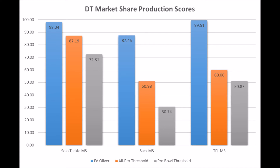He's going to be one of those types of defensive tackle prospects, or defensive line prospects in general, like a Myles Garrett, like a Joey Bosa, like a Jadeveon Clowney. Those were guys who had this type of production profile — obviously not at defensive tackle, but at the edge position. None of the edge players I've seen thus far have a Joey Bosa, Myles Garrett, or Jadeveon Clowney-like profile coming into the year. But Ed Oliver, at the defensive tackle position, does have that type of profile.